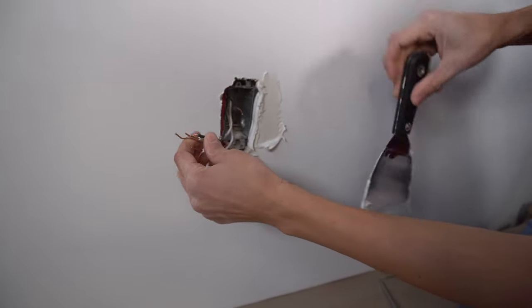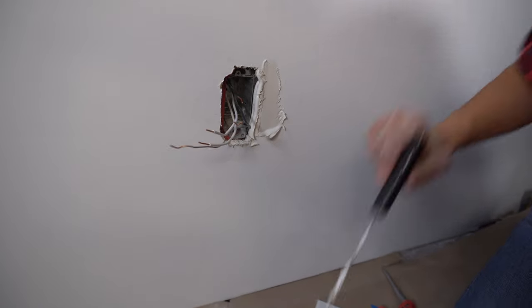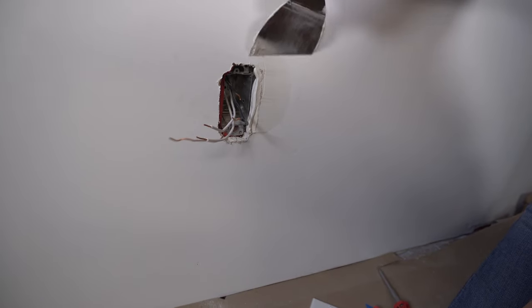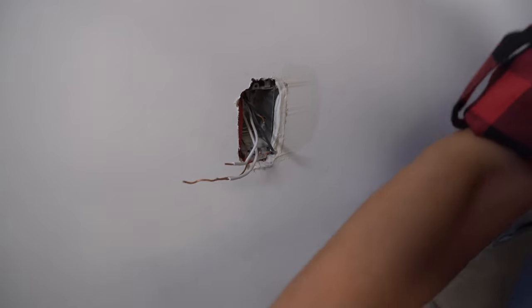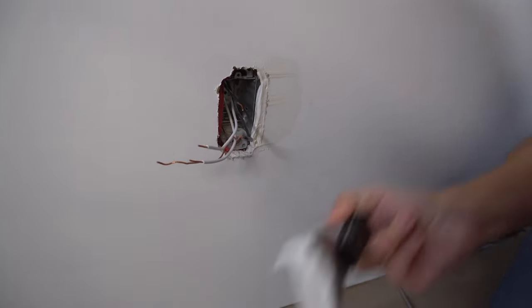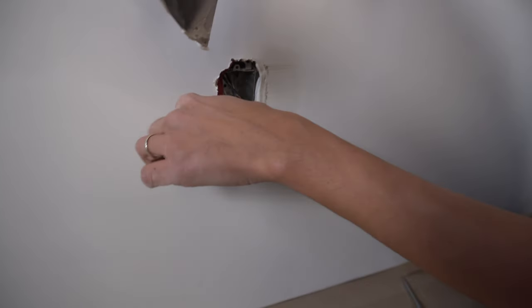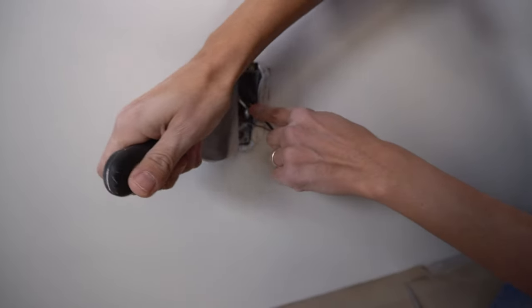That's just going to dry in behind the box extender, and it's just going to prevent drafts because we live in a cold climate over here, and we don't want to have drafts coming through our box. And you can actually feel there's a lot of cold air coming in behind. So this is just a nice way to seal it up.